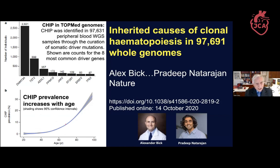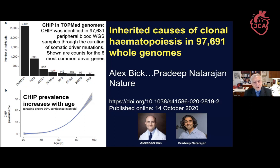This is from work of Alex Bick and Pradeep Natarajan, two of my brilliant collaborators. Although there are several dozen known leukemia driver genes, only a handful cause clonal hematopoiesis — notably DNMT3A and TET2. In particular, TET2 is the one we think is most likely associated with cardiovascular disease.